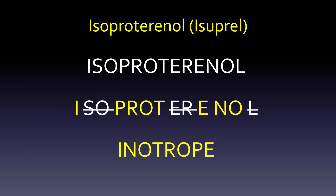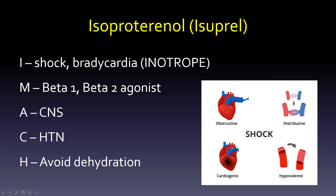Let's start with isoproterenol and the mnemonic here. If you take the word isoproterenol and remove the S-O, the E-R, and the L, you actually have all the letters for 'inotrope.' And that's what it does — if you don't remember what an inotrope is, it increases the force of contraction of the heart. It's also a chronotrope, which increases heart rate.